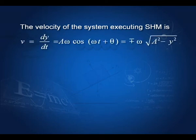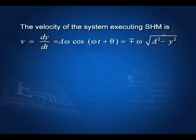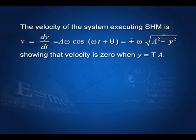The velocity of a system executing SHM is v = dy/dt. Differentiating y = a sin(ωt + θ) gives v = aω cos(ωt + θ), which can also be written as v = ±ω√(a² − y²). This shows that velocity is zero when y = ±a — that is, at the extreme positions, velocity is zero.